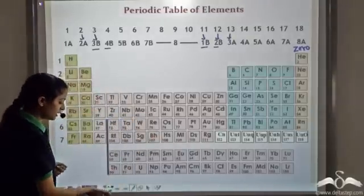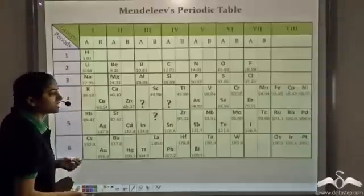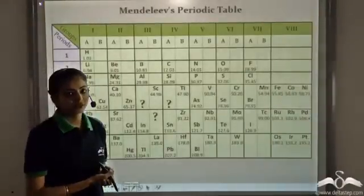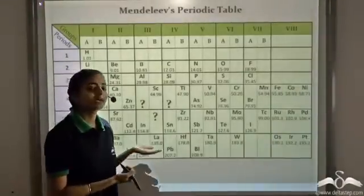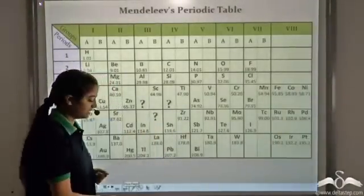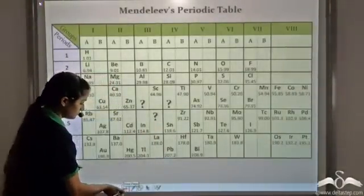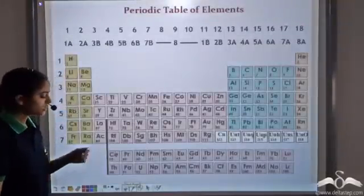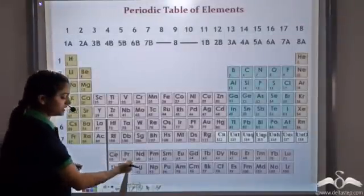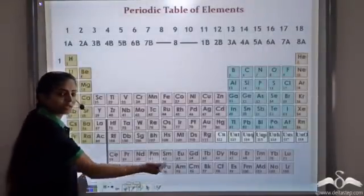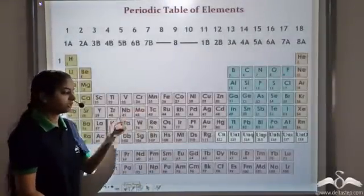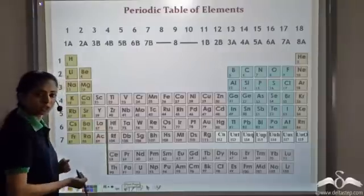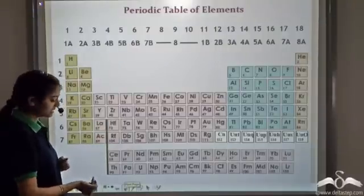The modern periodic table is an extension of Mendeleev's periodic table — it rectifies all the problems present in his table. You might be confused by the two series of elements not placed in the main periodic table. Let's see what that line joining them represents.